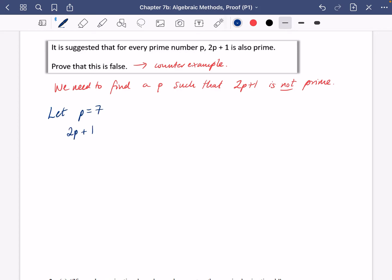But let's try it with p being equal to 7. 2p + 1 would be equal to 14 + 1, which is equal to 15. And 15 is not prime. Hence, we have proven this is false. So it can be quite easy for those kinds of things.